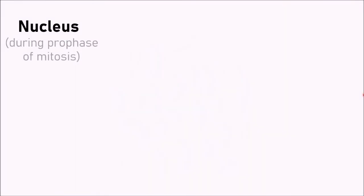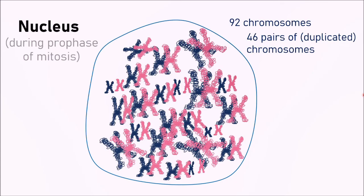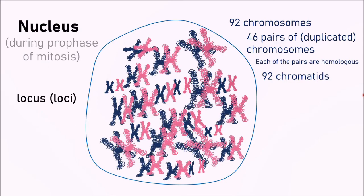Now let's look at the nucleus when it's preparing for division — during prophase of mitosis. Everything has been replicated since DNA replication has already taken place. This means we have 92 chromosomes, 92 sticks, or arms of a chromosome. There are also 46 pairs of duplicated chromosomes, each of those pairs being homologous. The position of a gene is also referred to as the locus, plural loci — the fixed position of a gene on a chromosome. If the loci of a gene are the same on paired duplicated chromosomes, those four chromatids together are homologous and form a bivalent. Overall, there are 92 chromatids.